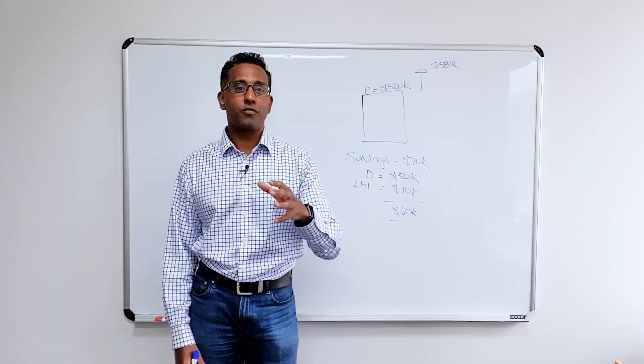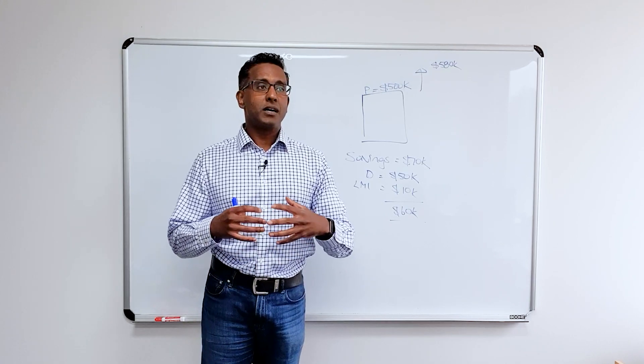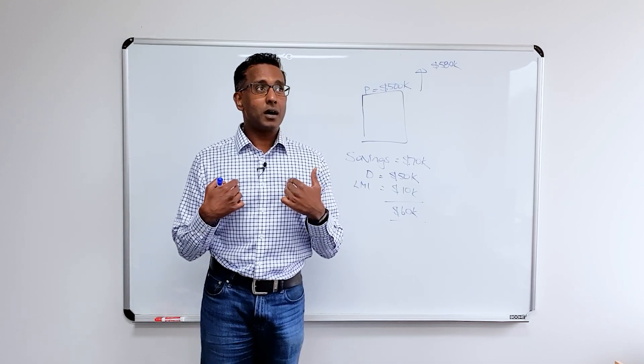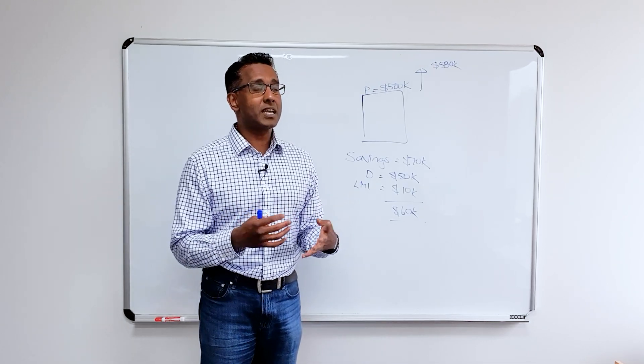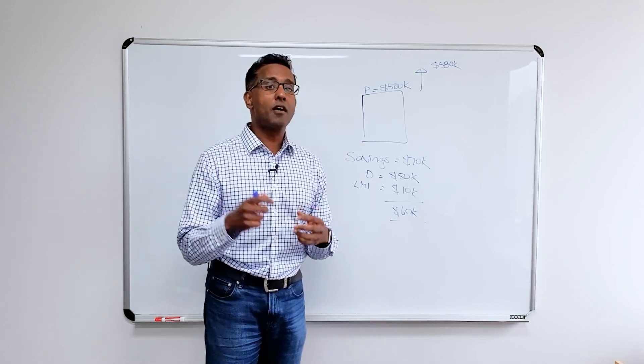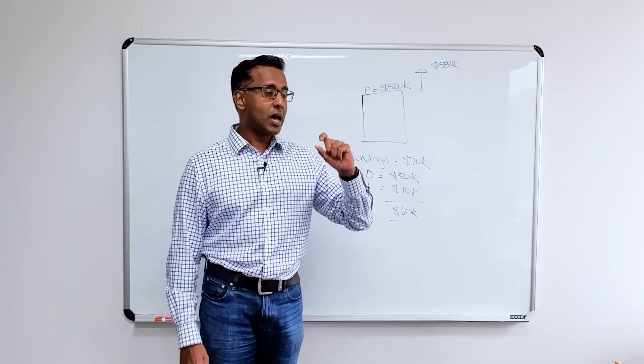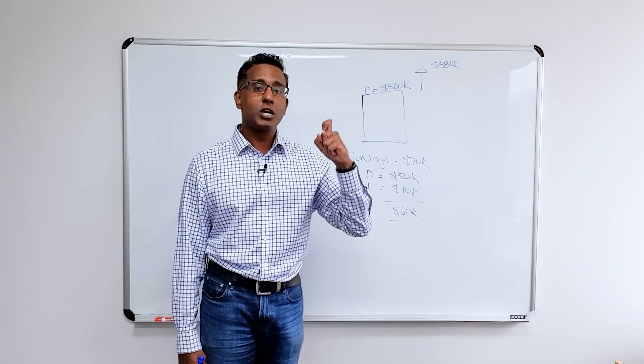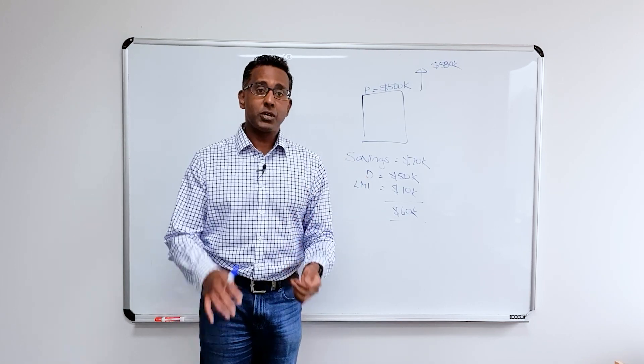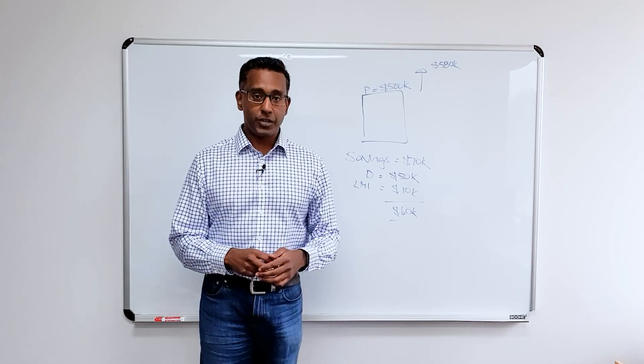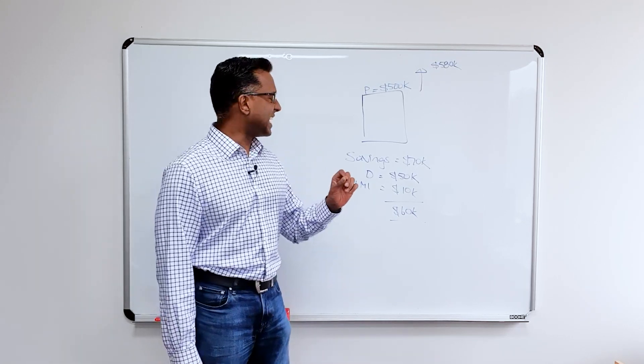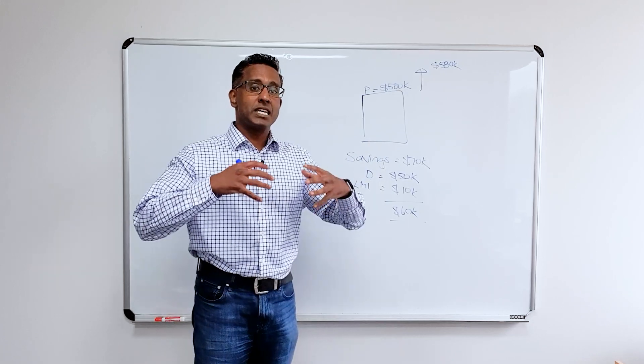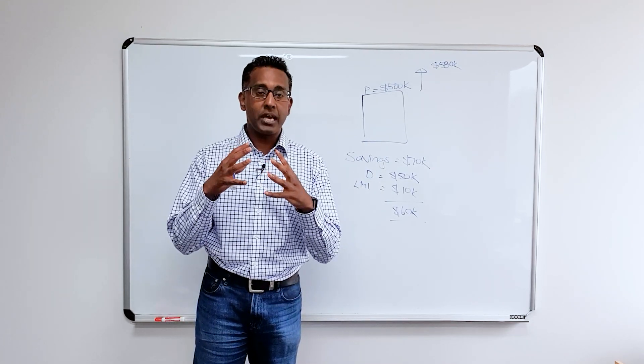So if you're someone who wants to build a property portfolio more quickly and LMI is something that you're trying to grapple with, I can tell you personally, I may not say all, but I'd have to say the vast, vast majority of all my properties, I've got in at 90%. So 90% loan, I've paid the loan mortgage insurance premium, I've got in faster, and that's always worked out so much better for me. So you need to decide if that's right for you.